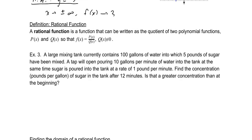Example three: a large mixing tank currently contains 100 gallons of water into which five pounds of sugar has been mixed. A tap will open pouring 10 gallons per minute of water into the tank, while sugar is poured in at a rate of one pound per minute. We need to write a function for concentration at time t. Concentration is the amount of sugar divided by the amount of water, in pounds per gallon.